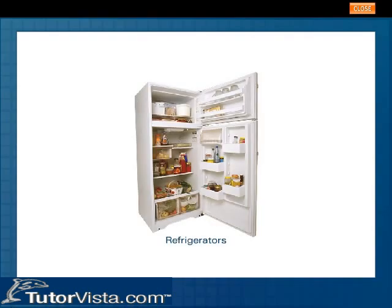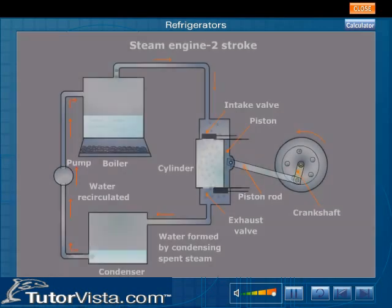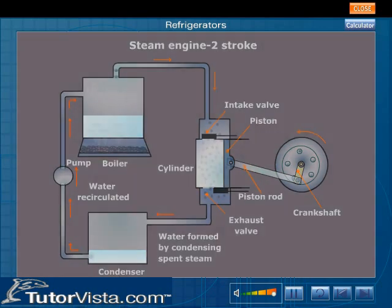Refrigerators. We can think of a refrigerator as a heat engine operating in a reverse direction. A heat engine takes heat from a hot place and gives off heat to a colder place. A heat engine has a net output of mechanical work, but the refrigerator requires a net input of mechanical work.